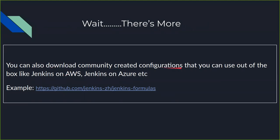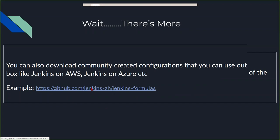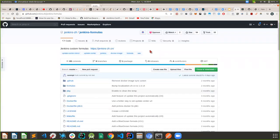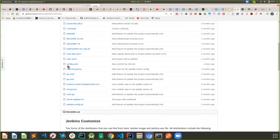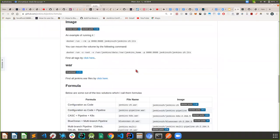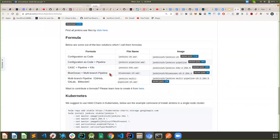Downloading community-created configurations directly using this service will be very helpful. I'd like to take you to the Jenkins formulas page that currently exists. If you look at this repository, it is maintained by one of the mentors for this project, and it has a set of Jenkins formulas. These Jenkins formulas are basically WAR files or instances that you can directly download — Blue Ocean, multi-branch pipeline, and so on.